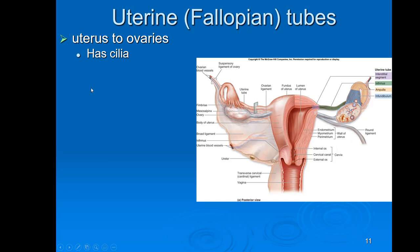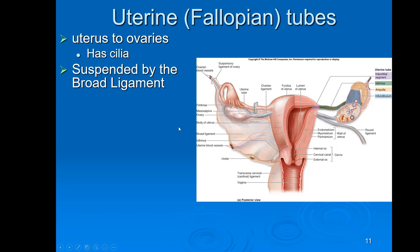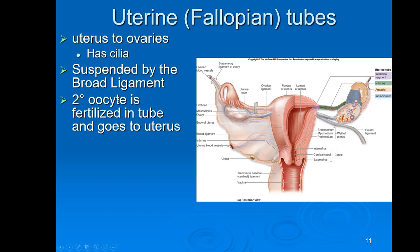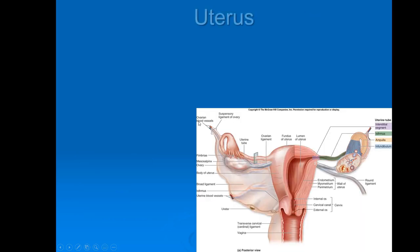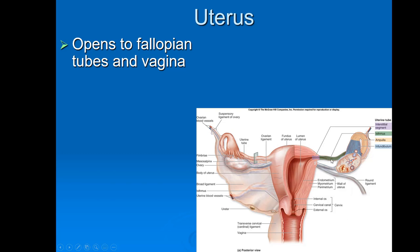The fallopian tubes, or uterine tubes, connect the uterus to the ovaries and have cilia on the inside to move the oocyte through. The secondary oocyte is generally fertilized in the fallopian tube and then travels to the uterus to implant. Parts of the fallopian tube include the infundibulum — the blue region with finger-like projections called fimbriae that guide the egg into the tube — the curved region called the ampulla, the long isthmus, and the interstitial segment that enters the uterus.